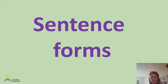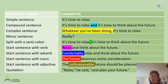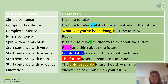Sentence forms — it's very important that you vary your sentences to make your writing interesting. If they all have the same structure, it becomes very dull. Here are some examples. As you can see, there are lots of ways of starting sentences — try and mix them up to give variety. 'It's time to relax' is a simple sentence. A compound sentence would be 'It's time to relax and it's time to think about the future' with a joining word. A complex sentence: 'Whatever you've been doing, it's time to relax.' 'Whatever you've been doing' does not stand on its own. A minor sentence — 'Really' — no verb.